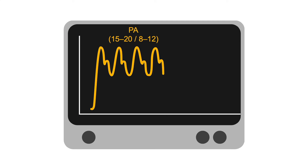Let's practice obtaining the very important wedge pressure. Watch as the balloon inflates and we see the PA waveform transform into a venous waveform. Notice the overall pressure is lower and the waveform is exactly as we expect for venous and is not over-damped or flattened.